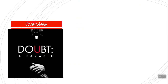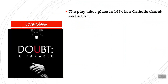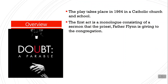First, to give you an overview of the play: the play takes place in 1964 in a Catholic church and school. The first act is a monologue consisting of a sermon that the priest, Father Flynn, is giving to the congregation. This is a play done in 10 acts.